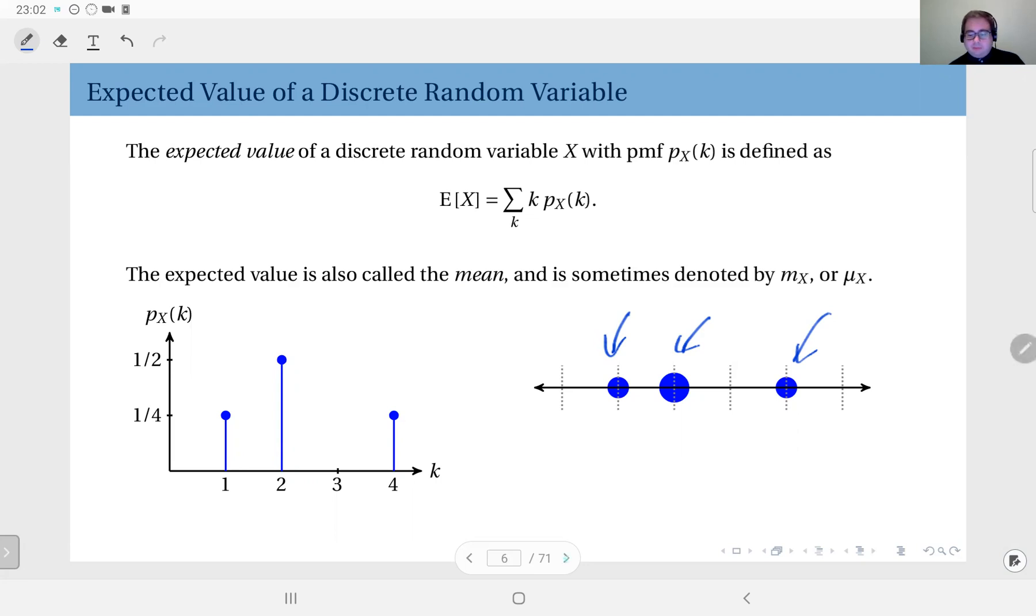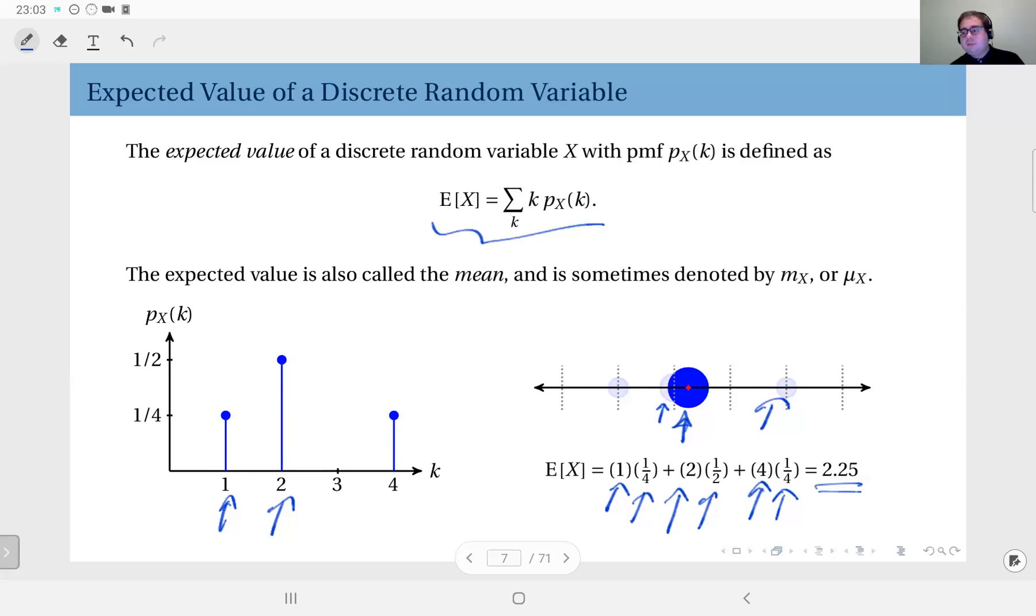So what you have is something like this. If you apply this definition, you have one, this outcome here, weighted by its probability one-quarter, and two, this outcome, with its probability one-half, and finally this mass here, four, with the weight of one-quarter. When you add them up you get 2.25, which corresponds to the center of mass here. So the expected value gives us the center of mass of such a distribution.